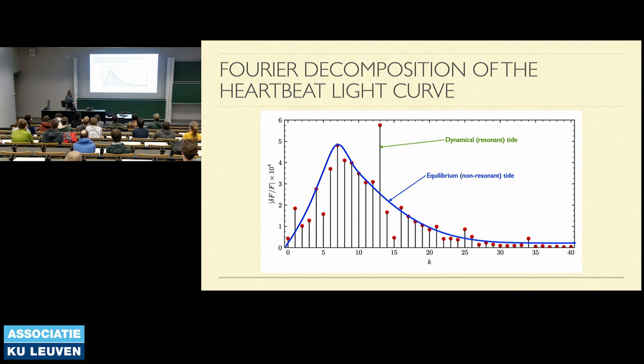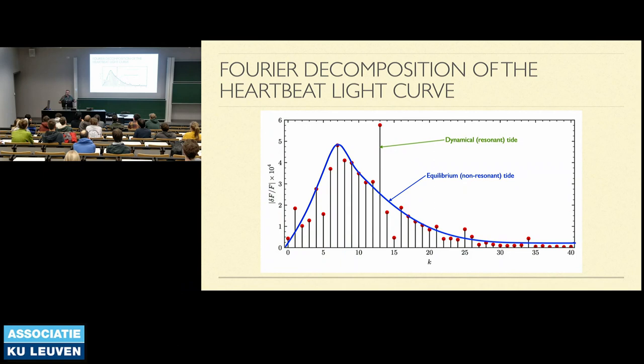This Fourier decomposition of the light curve shows that the amplitudes of all different harmonics, labeled by index K, form a relatively smooth envelope—all these harmonics contribute to the large equilibrium tide at periastron, which disappears away from periastron because the harmonics no longer constructively interfere. On top of that there is one mode, at harmonic index K=13, that is abnormally large due to near-resonance with a free oscillation mode, giving the dynamical tide visible at all orbital phases.